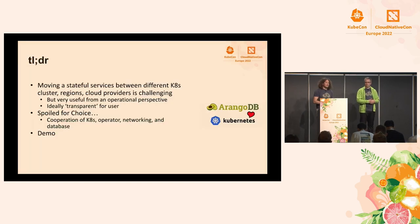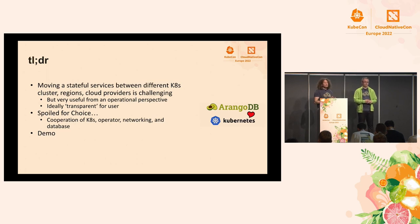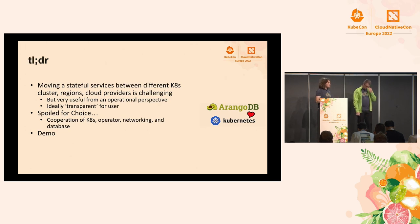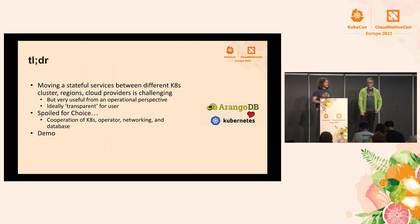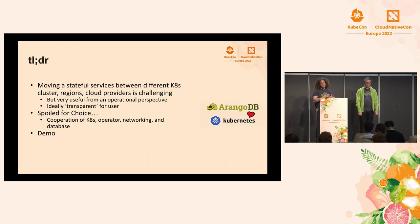But what is it really about? It's about moving stateful services — in our case, a distributed database — between different Kubernetes clusters, between different regions, and even between different cloud providers. This is quite a challenge because it should be transparent for the user. We want our database users to not lose availability of the cluster; they might have a small performance degradation. But from an operational perspective, this is super useful for upgrading and managing a general managed service for databases.